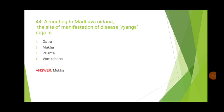The 44th question: according to Madhav Nidhana, the site of manifestation of disease vyanga roga — options are gatra, mukha, prishta, and vangshna. This is from Madhav Nidhana Shudra Roga Prakaranam. The shloka specially mentions 'nirujam tanukam shavam mukhe vyangha,' so it is a direct reference. Every year questions come from Shudra Roga, so please give importance to that area.